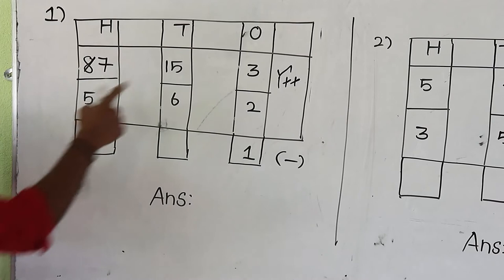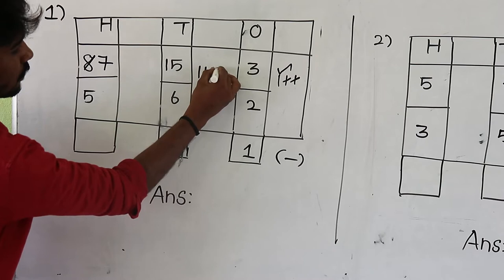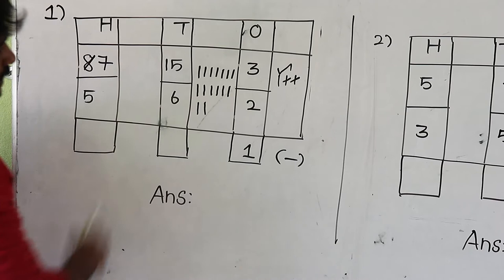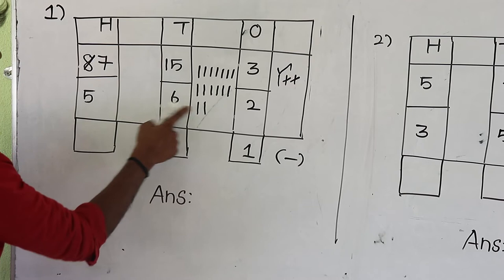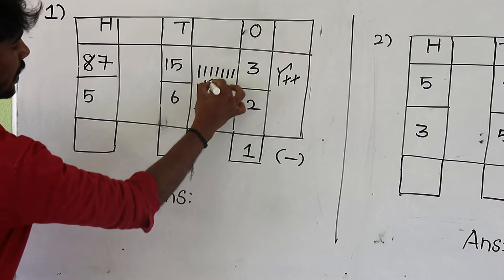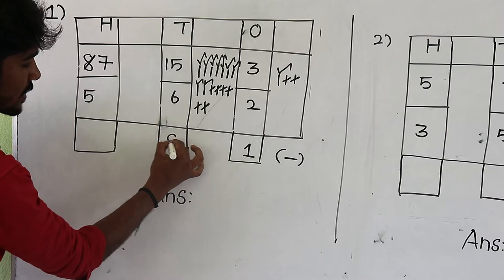So here the upper value is 15, lower value is 6. Draw 15 lines — 1 through 15. Next, 15 minus 6: cancel 6 lines — 1 through 6. Now count the remaining lines: 1 through 9. So write the answer here: 9. So 15 minus 6 is equal to 9.